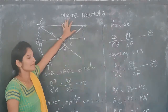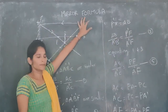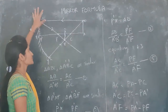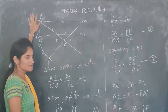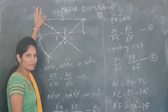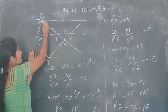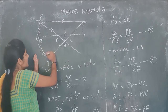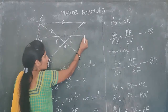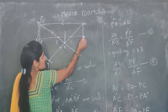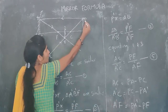Now we are going to derive the formula for mirror. For this, first we need to draw a diagram. We are considering a concave mirror and drawing the ray diagram. I am placing the object beyond C, and AB is the object.